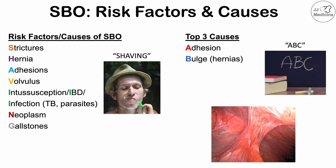The B in ABC stands for bulge, which helps us remember hernias — the second of the top three causes. And C stands for cancer or malignancy. So the top three causes of a small bowel obstruction are adhesions, bulges or hernias, and cancer.